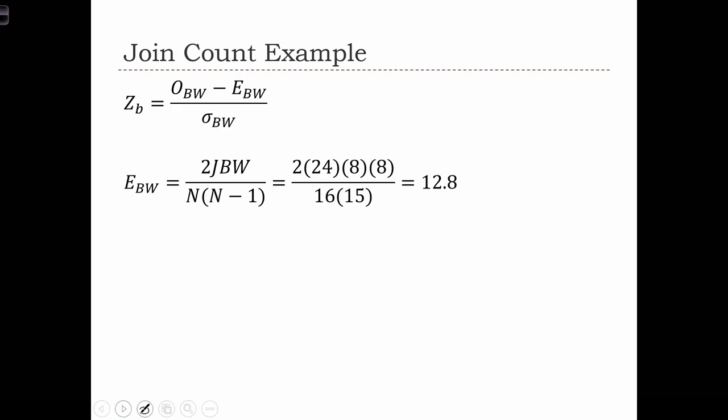We need to calculate the expected number of black-white joints. So we just plug in. Everything's the same, but now we have 8 and 8. And we see the expected number is 12.8. So the expected number has gone up from the previous example when we had 7 and 9 in here.